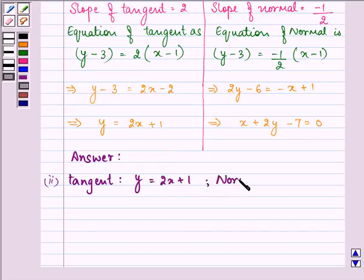And for normal, it is x plus 2y minus 7 is equal to 0.